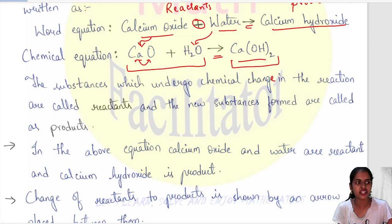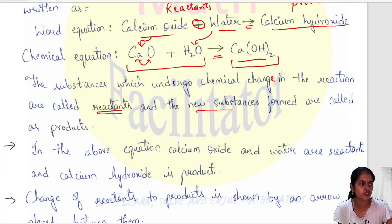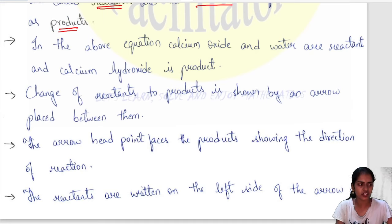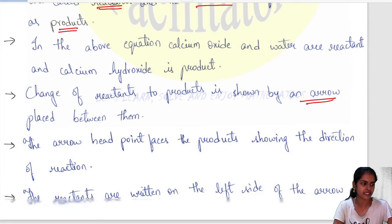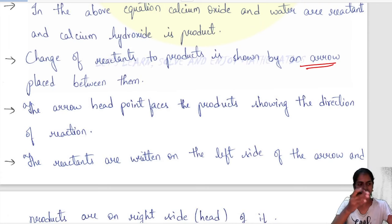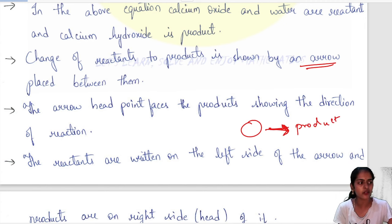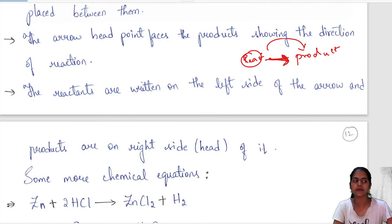The substances which undergo a chemical change in the reaction are called reactants — calcium oxide and water are undergoing the change. The new substances you get — calcium hydroxide — are called products. In the above equation, calcium oxide and water are reactants and calcium hydroxide is the product. The change of reactants to products is shown by an arrow mark, and the arrow head points in the direction of the products. Reactants are written on the left side of the arrow and products on the right side.